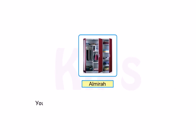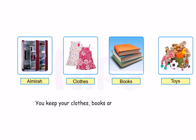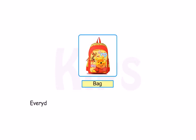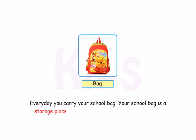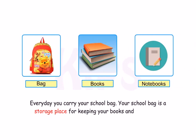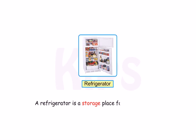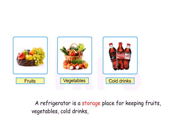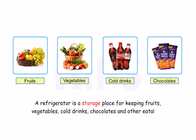You keep your clothes, books and toys in an almirah, so it's a storage place. Every day you carry your school bag. Your school bag is a storage place for keeping your books and notebooks. A refrigerator is a storage place for keeping fruits, vegetables, cold drinks, chocolates and other eatables.